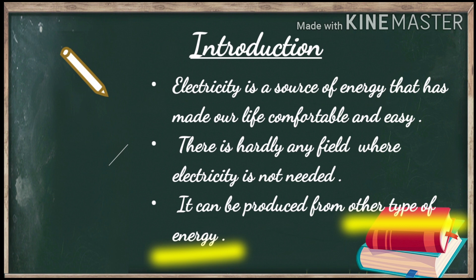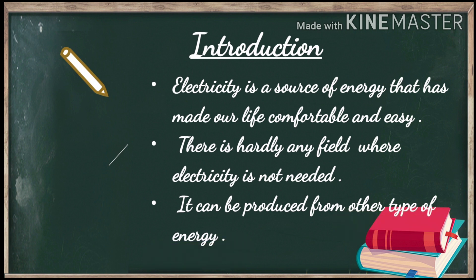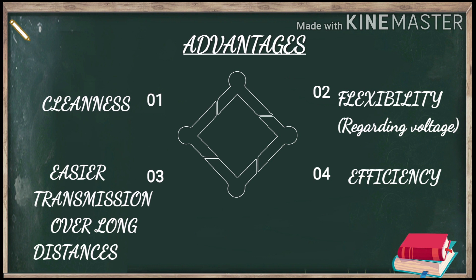The most important point is that electricity is a source of energy which we obtain or produce from other types of energy, like mechanical energy and chemical energy. From these energies we can produce electrical energy, like in electrochemical cells where we convert chemical energy into electrical energy. This means electricity has some advantages over other forms of energy.